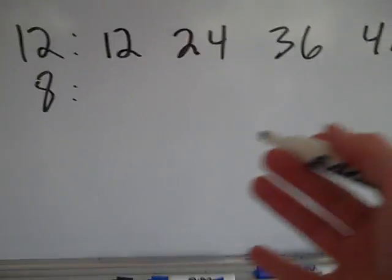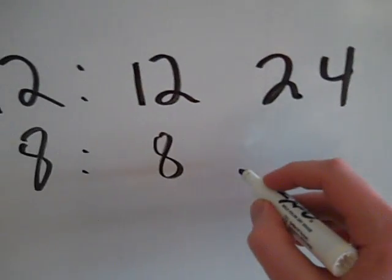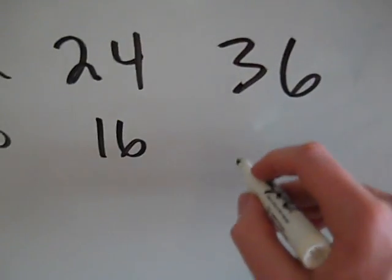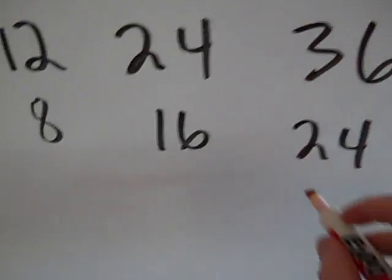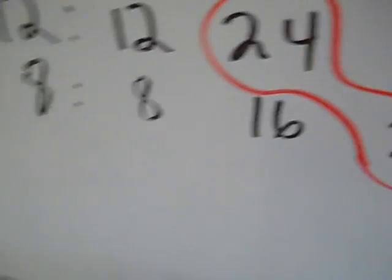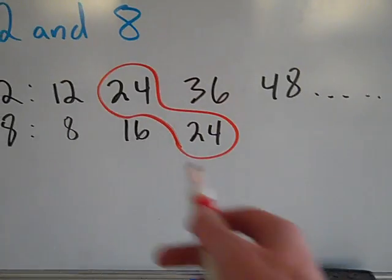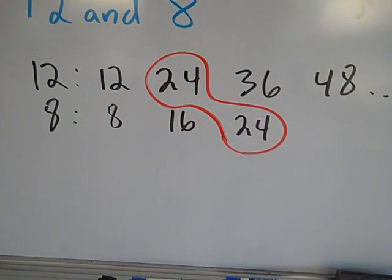But at some point you have to stop because you have to test the other number to see if it goes into any of these numbers. So multiples of 8 are 8 times 1, then 16, then times 3 is 24. And I can stop because I've hit a common multiple, it's the lowest of the common multiples, 24. Eventually there will be another common multiple, but right now the lowest common multiple is 24.